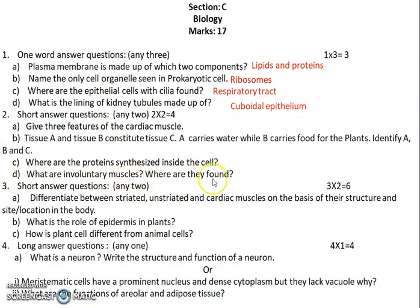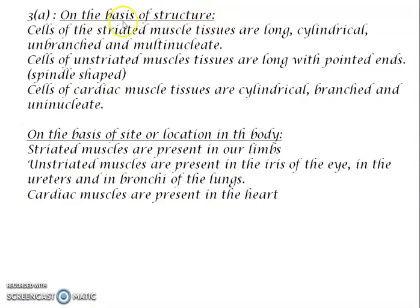Question 3a, a three-mark question: differentiate between striated, unstriated, and cardiac muscles on the basis of structure and location. On the basis of structure: striated muscles are long, cylindrical, unbranched, and multinucleate; unstriated muscle cells are spindle-shaped with long, pointed ends; cardiac muscle cells are cylindrical, branched, and uninucleate. On the basis of location: striated muscles are in the limbs; unstriated muscles are in the eye, ureters, and bronchi of the lungs; cardiac muscles are in the heart.